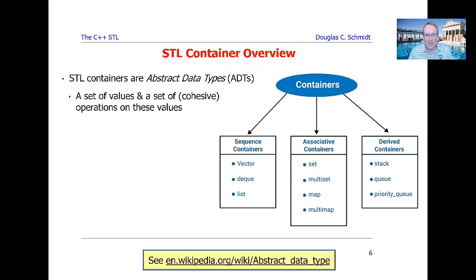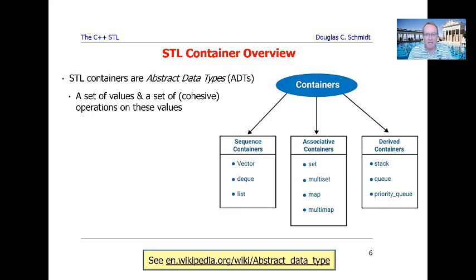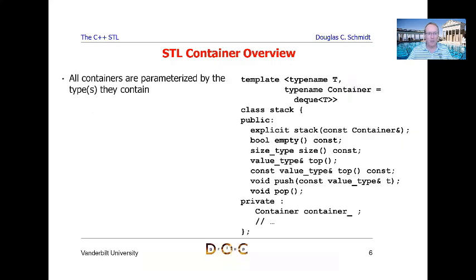STL defines a whole bunch of these and breaks them up into different categories. We have sequential containers, which include things like vector, deque, and list. We have associative containers, which include sets, multi-sets, maps, and multi-maps. And then we have adapted or derived containers — stacks, queues, and priority queues.